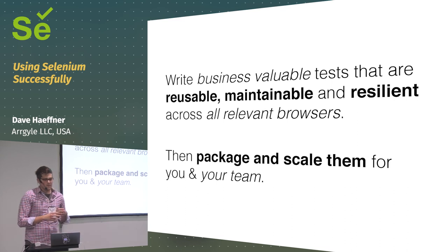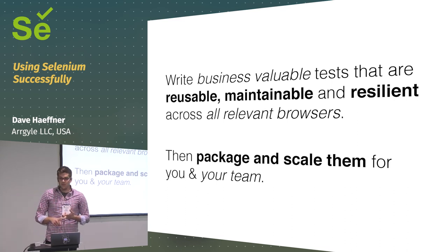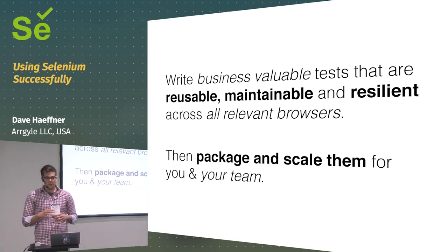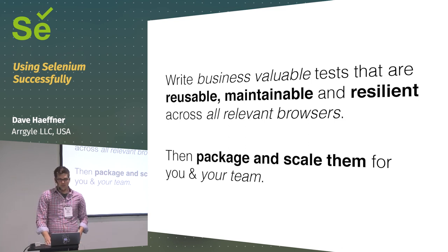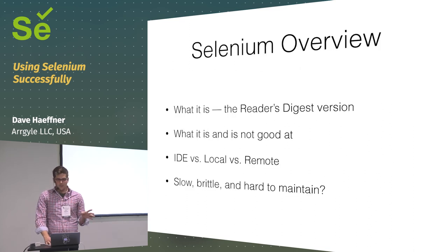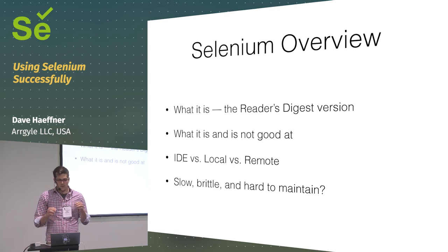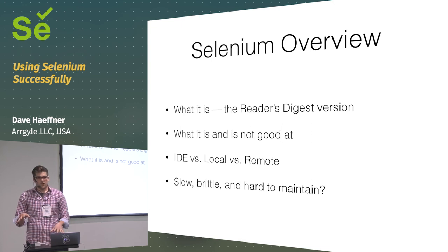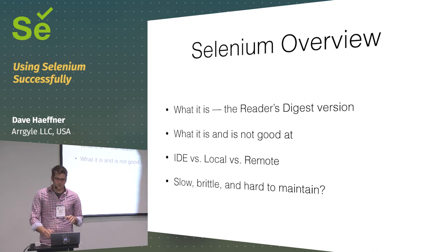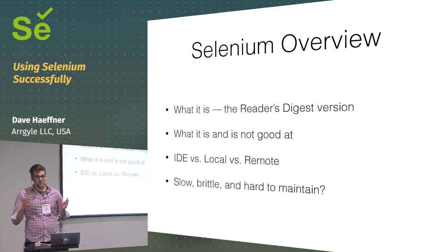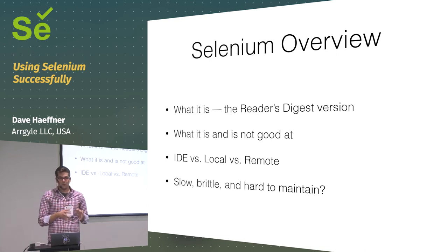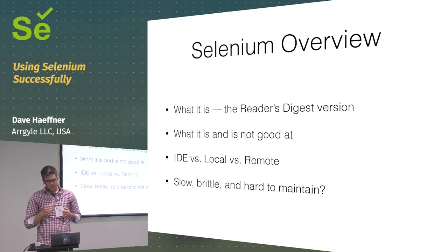Everyone here has their own Rubik's Cube when it comes to Selenium, and I'm going to step through patterns I apply at company after company that help them solve their version. The outcome is how to write business-valuable tests that are reusable, maintainable, and resilient across the browsers you care about — and you can package those up and scale them for your team. Selenium is essentially a robot sent from the future to help us test web and mobile applications. It's good at mimicking human action but not good at testing lower-level functionality like getting status codes — it's not the right tool for that job.